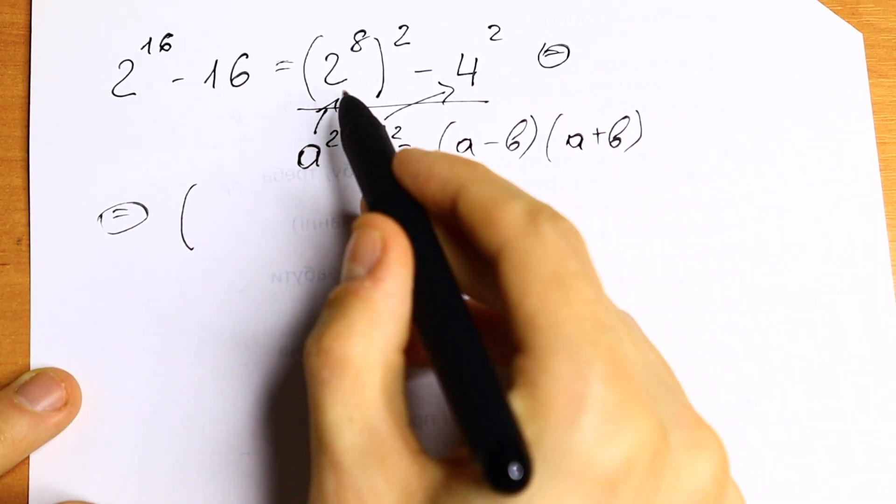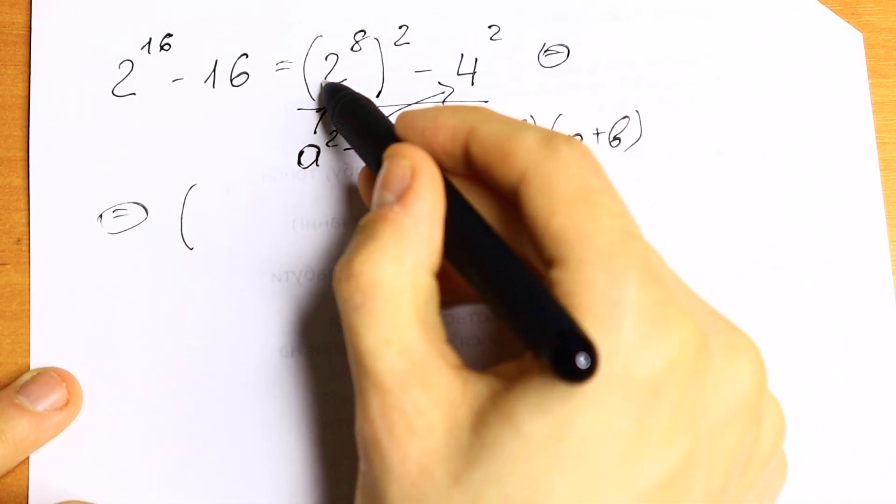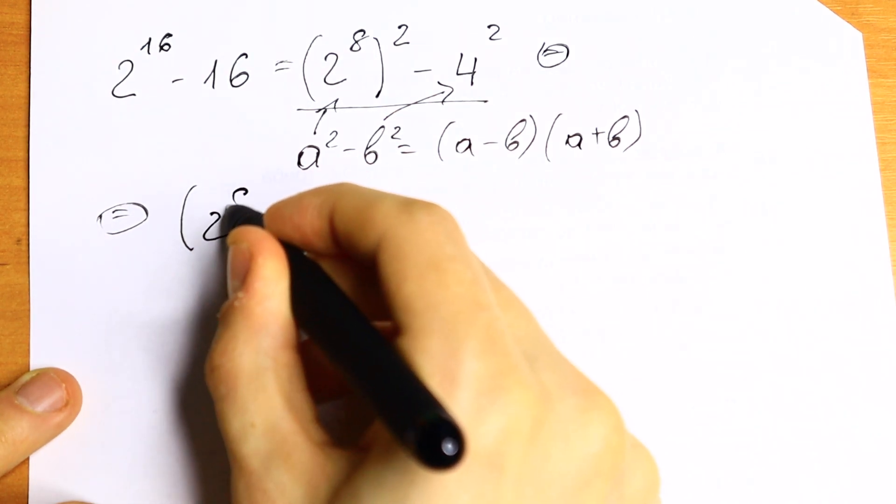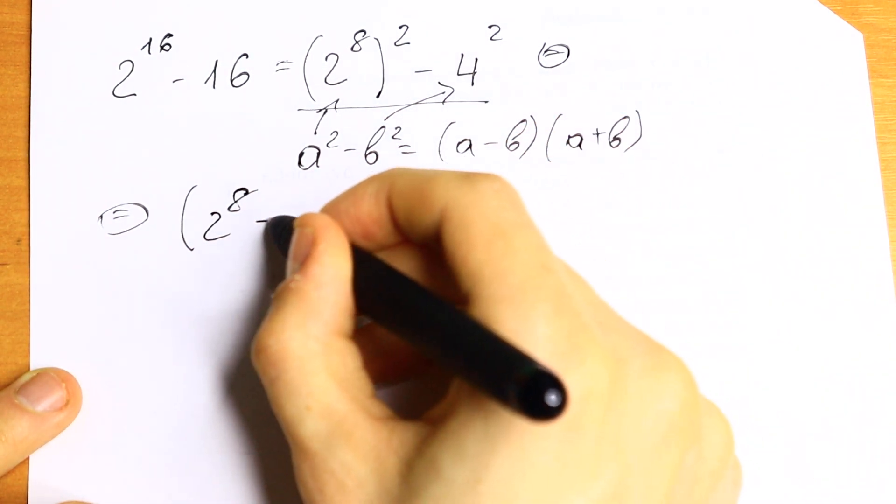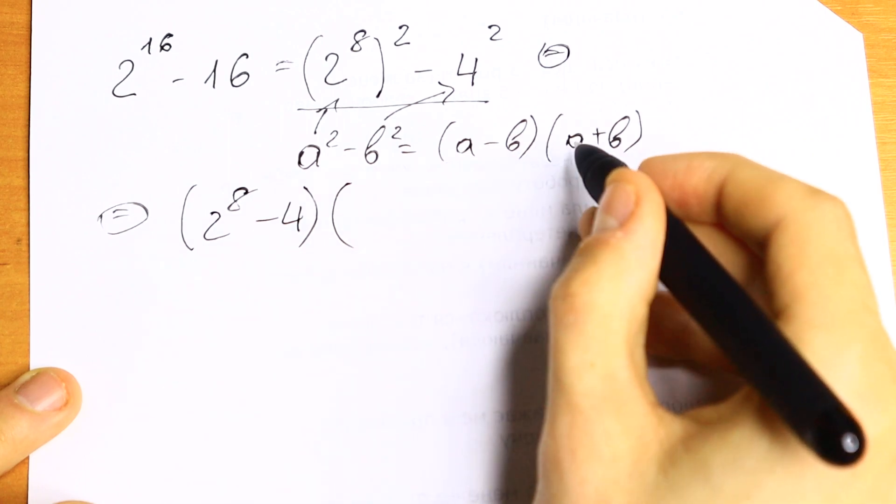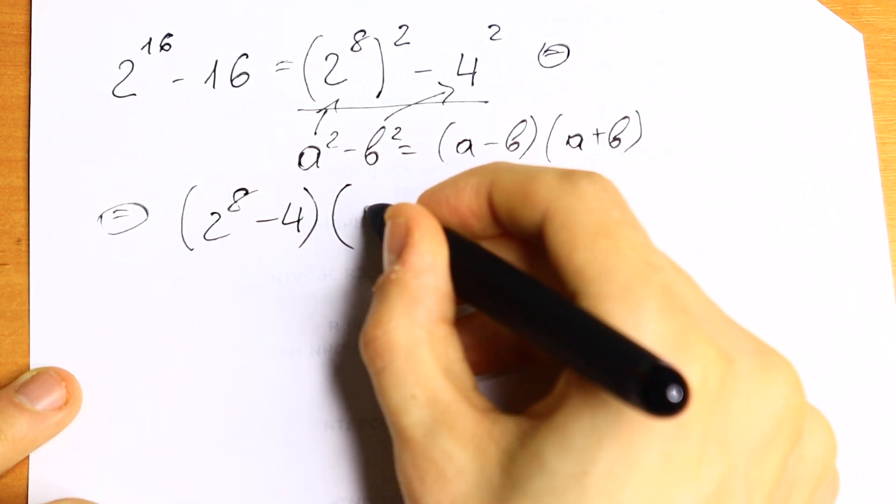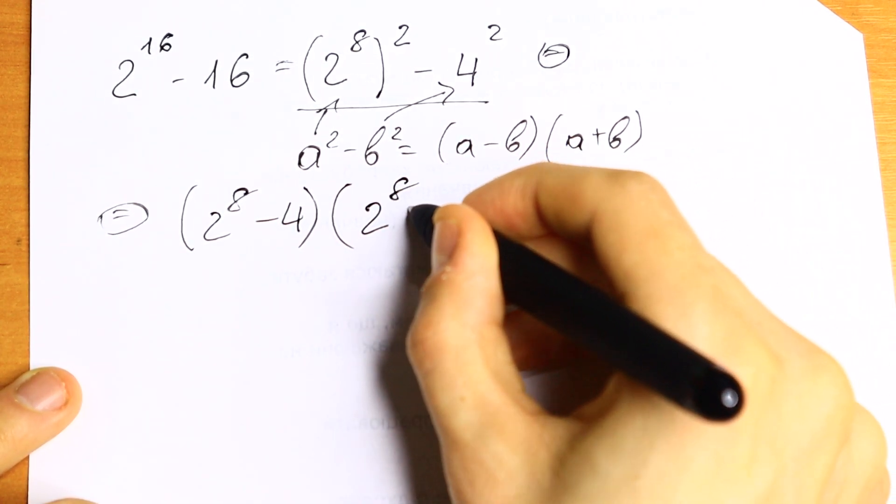In the first parenthesis we will have a minus b. a equals 2 to the 8th power, minus b. b equals 4, minus 4. And the sum. In the next parenthesis we will have sum 2 to the 8th power plus 4.